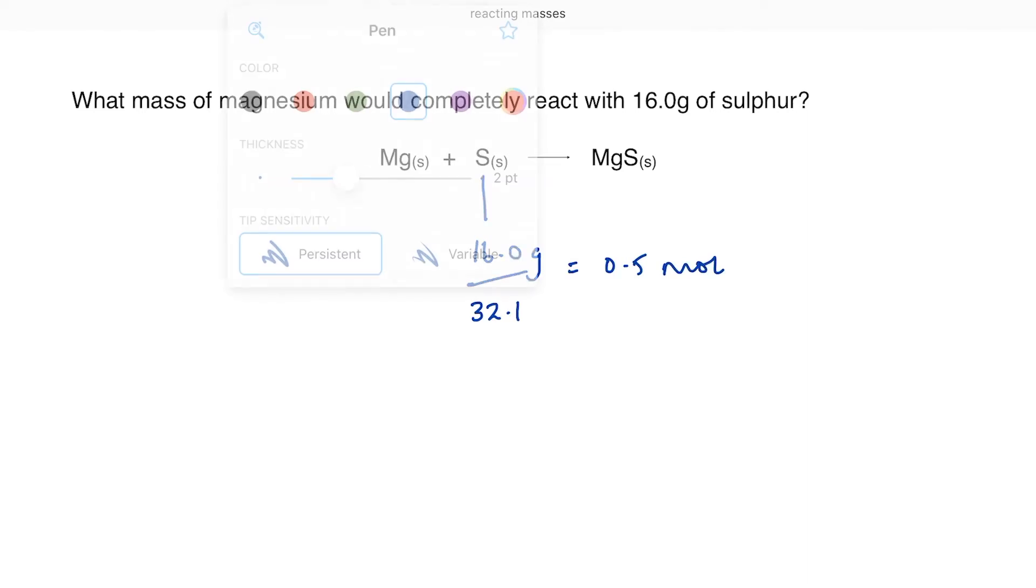That is step one. Step two is to go back to my balanced equation and look for the ratio. The ratio is what the big numbers in the balanced or stoichiometric equation are showing us. And when we have no numbers, we assume those numbers are one. So this equation tells me that one mole of magnesium reacts with one mole of sulphur. It's a one to one ratio, but I don't have one mole of sulphur. I've got 0.5 moles of sulphur, which means that in order to react completely, I'm going to require 0.5 moles of magnesium. What mass is that? Very simply, it's going to be number of moles times the molar mass of magnesium, which is 24. And that comes out to 12 grams.